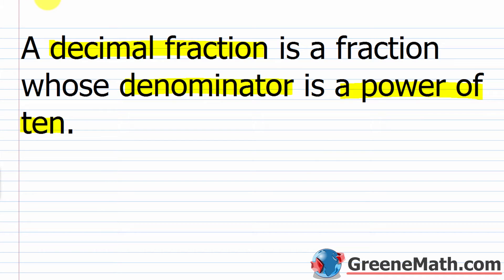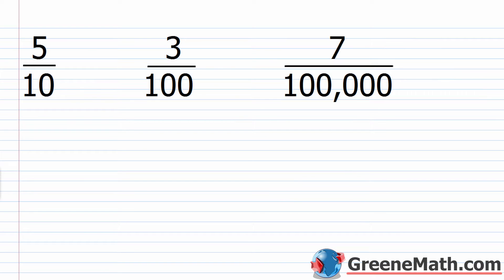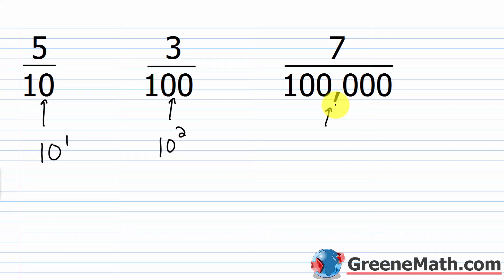What do we mean by the denominator being a power of 10? It means you can take the denominator and rewrite it as 10 raised to a whole number that is 1 or larger. Here are some examples: 5 tenths — the 10 can be written as 10 to the 1st power. 3 hundredths — 100 is 10 to the 2nd power. Seven hundred-thousandths — 100,000 has five zeros, so it's 10 to the 5th power. In each case the denominator is a power of 10.